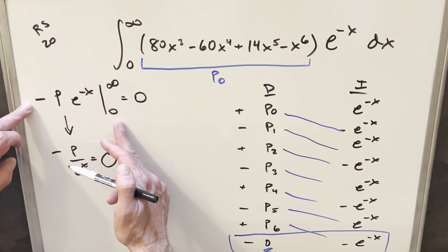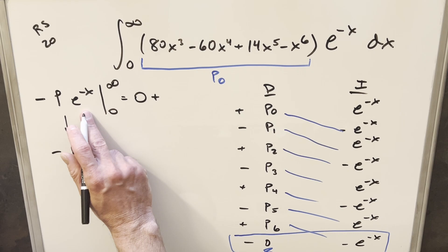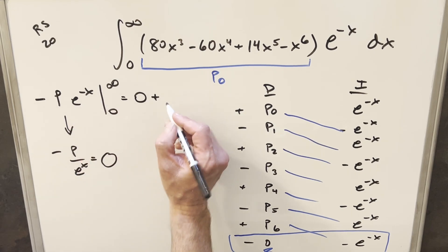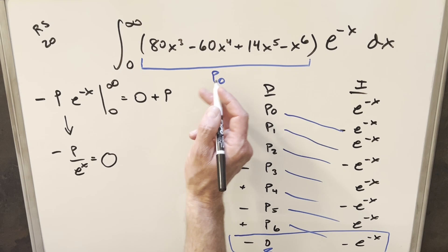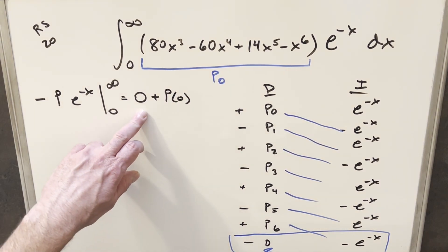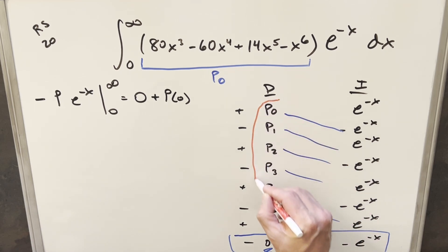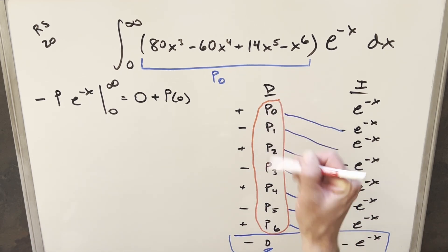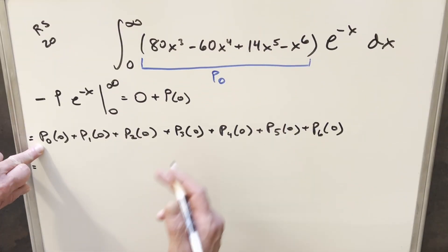And then for the second part, evaluating at zero, minus times minus is going to give me a plus here. When we plug a zero in, e^(-0) is just going to be one. So we're just going to be left with P. But the P, the polynomial, is going to need to be evaluated at zero. But now since this first part is zero, we've really reduced our problem. All we're going to do is take all of these polynomials and all we need to do is add them up evaluated at zero.